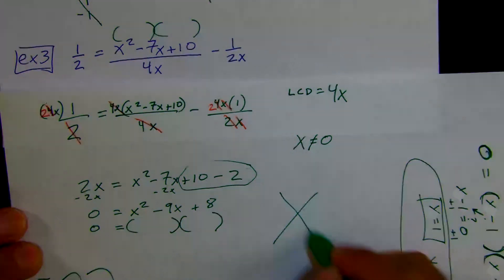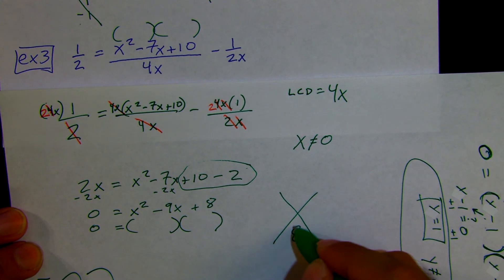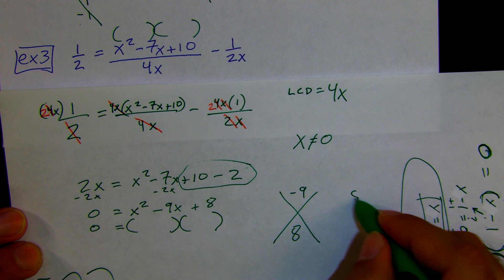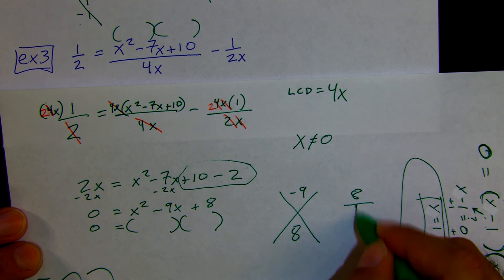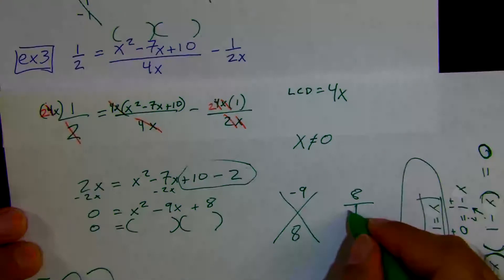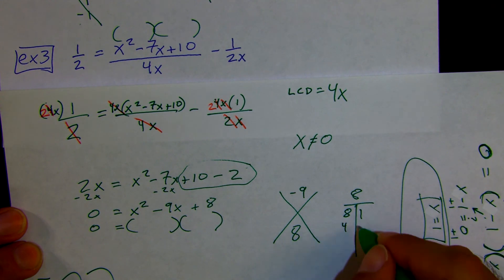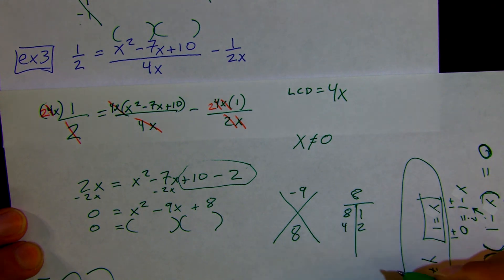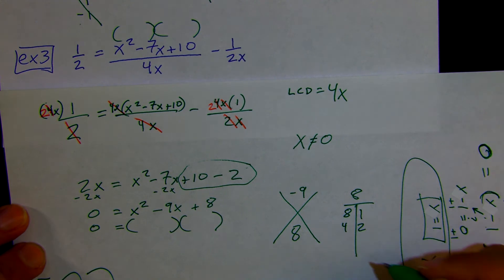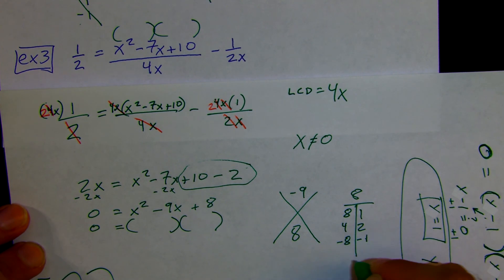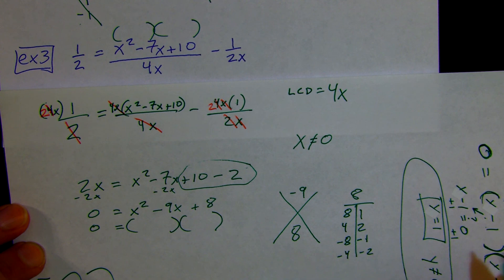Let's put in 8 and negative 9 for the x method. What multiplies to give you 8? Options: 8 times 1, 4 times 2, negative 8 times negative 1, negative 4 times negative 2. Which one of those adds to give you negative 9?